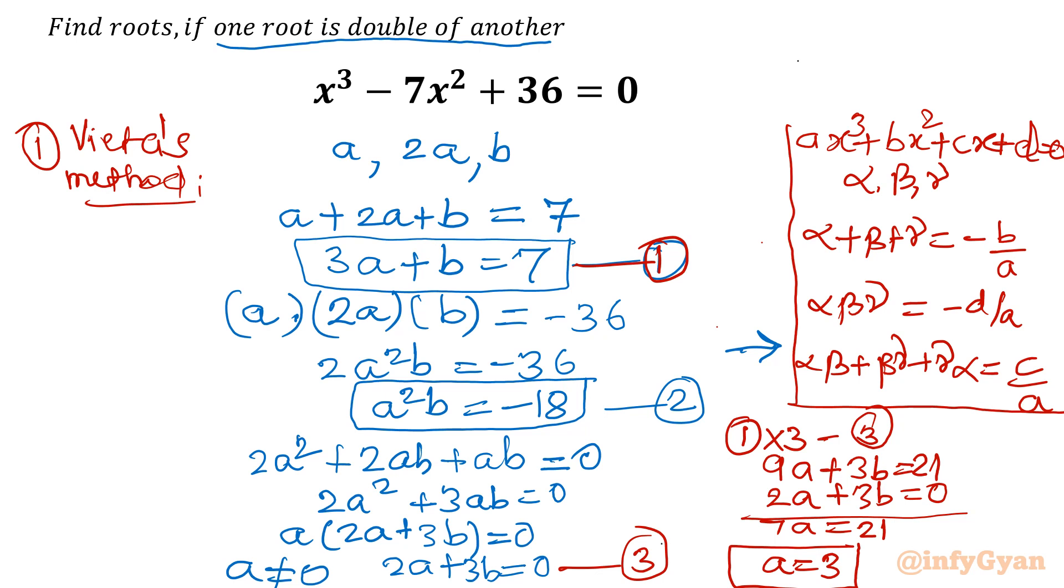Once a is 3, 2a will be 6. Now let's find b. Let me put the value of a here: 3² × b = -18, so b will be -2. So the third root is -2.